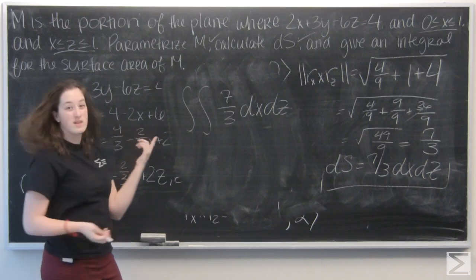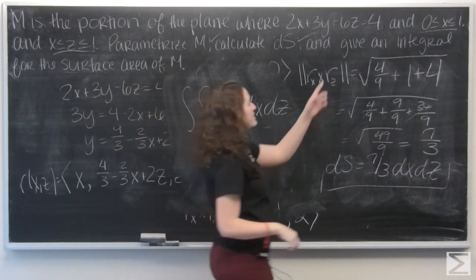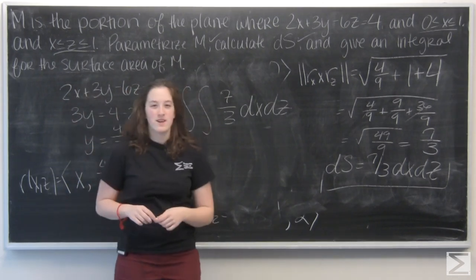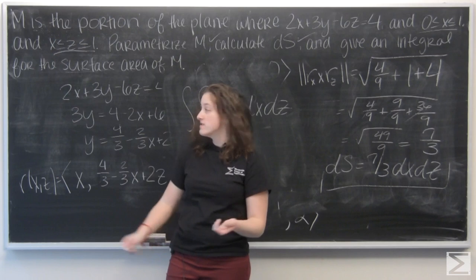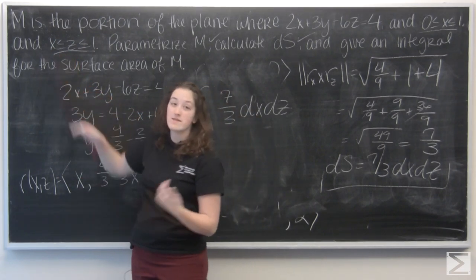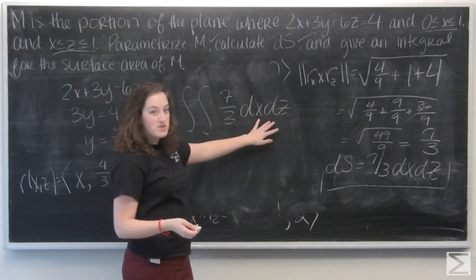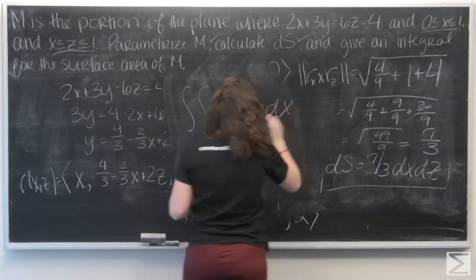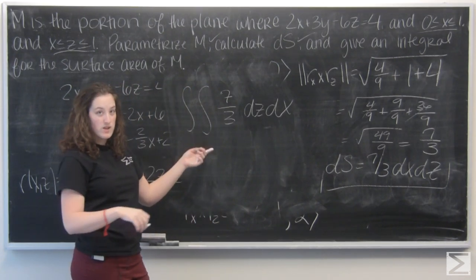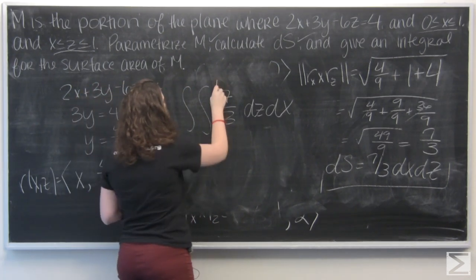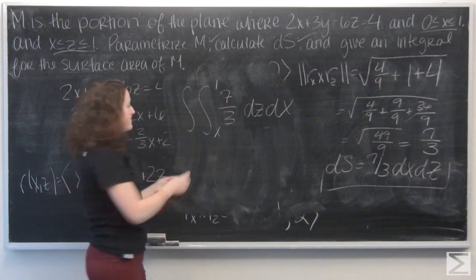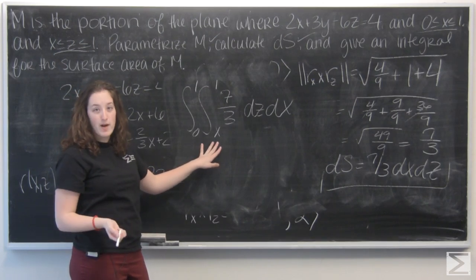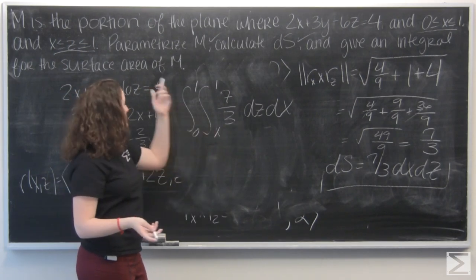And then I just need to write bounds of integration. And they're actually given to me in the problem. So x between 0 and 1 and z between x and 1. So I'm going to want to integrate with respect to z first because one of the bounds is a function of x. So let me switch these. And then I can say that I want to integrate z from x to 1, and that I want to integrate x from 0 to 1. So this integral represents the surface area of M.